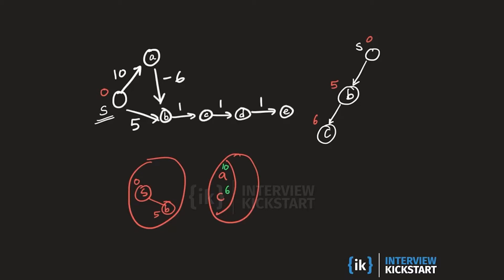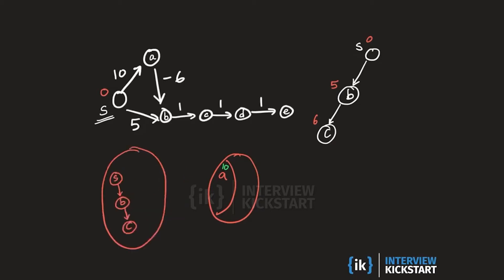We look at c's outgoing edges. The final distance value on c was 6, and when we look at its outgoing neighbors we add d to the priority queue with a tentative distance value of 6 plus 1, which is 7. In the next step we pull d out with a final distance label of 7, so d becomes a child of c.